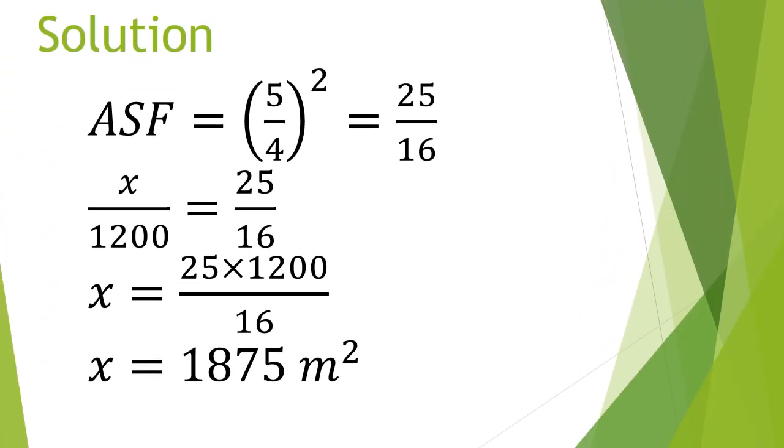The solution: area scale factor is 5 over 4 squared, and that gives us 25 over 16. X over 1,200 is equivalent to 25 over 16. X is 25 times 1,200 all over 16. So X is 1,875 m squared.